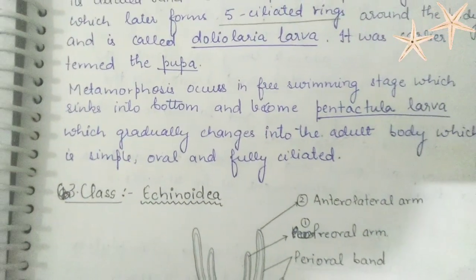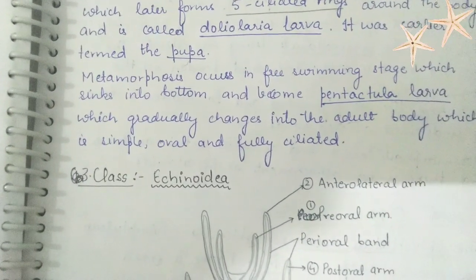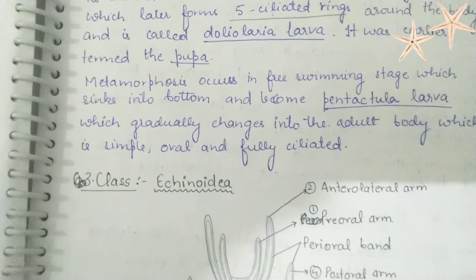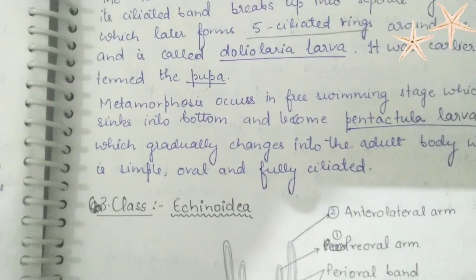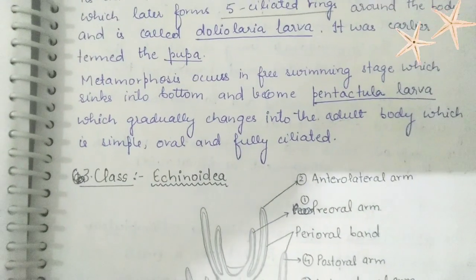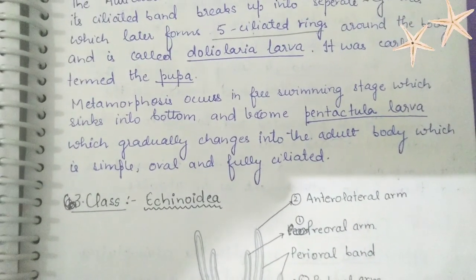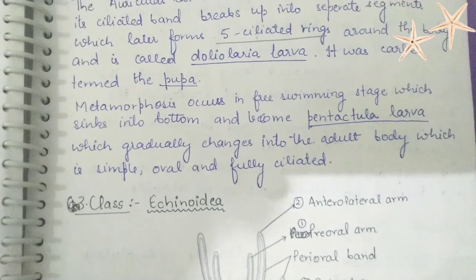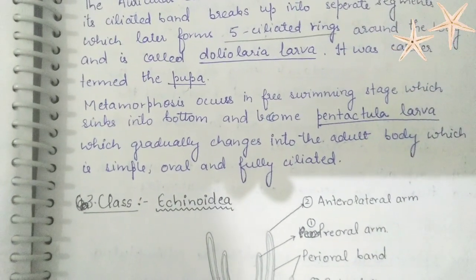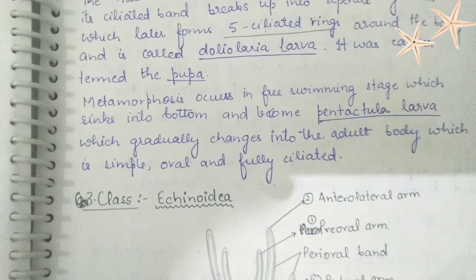The metamorphosis occurs in the free-swimming stage. When the doliolaria larva sinks to the bottom, it becomes the pentactula larva, which gradually changes into the adult body — simple, oval, and fully ciliated. This is how larval development takes place in Class Holothuroidea: the auricularia larva changes into the doliolaria larva (also termed pupa), and after that it changes into the pentactula larva, which becomes the adult.